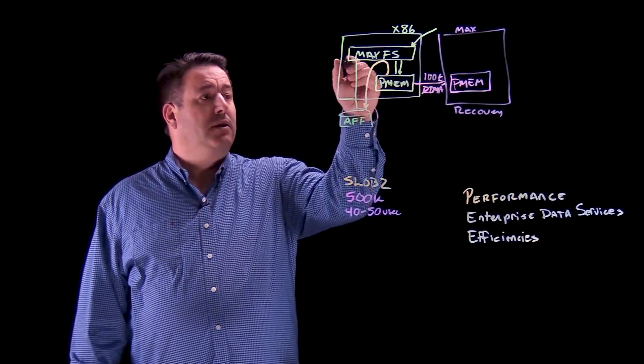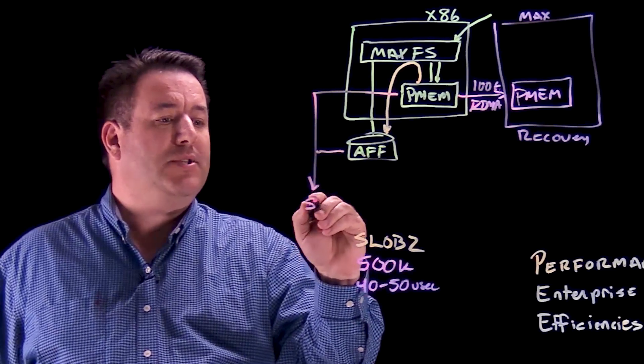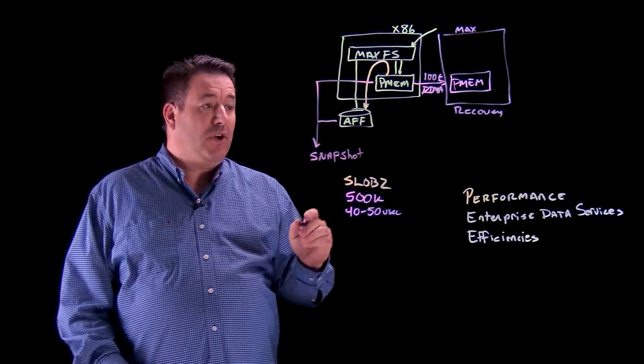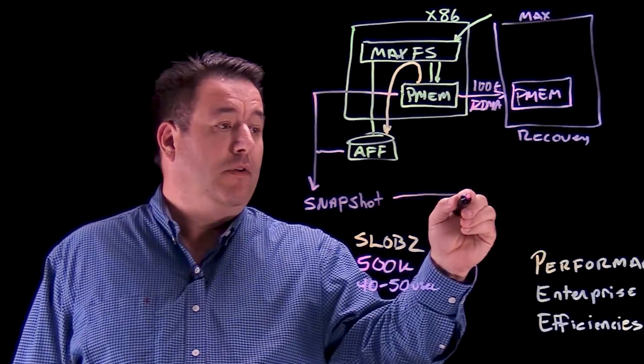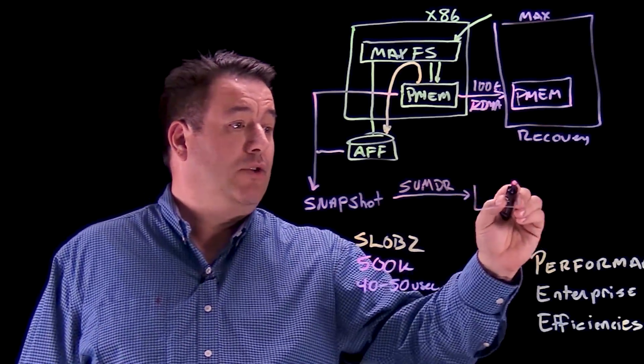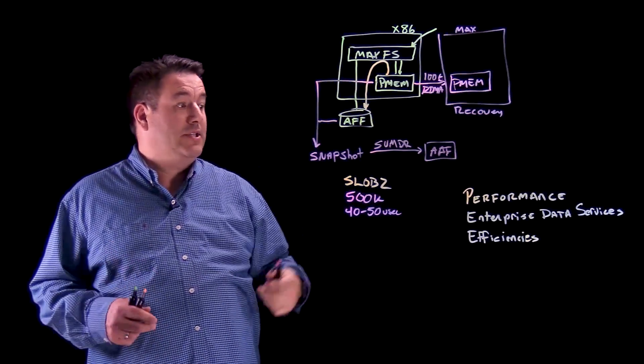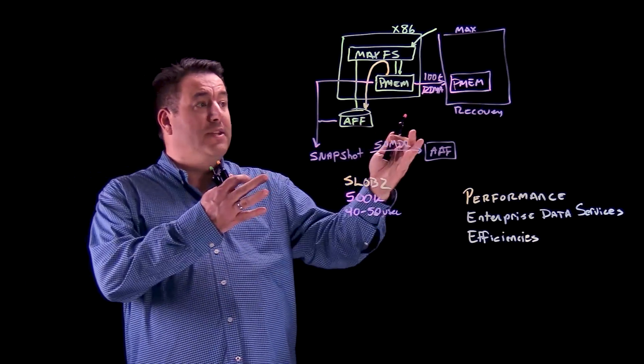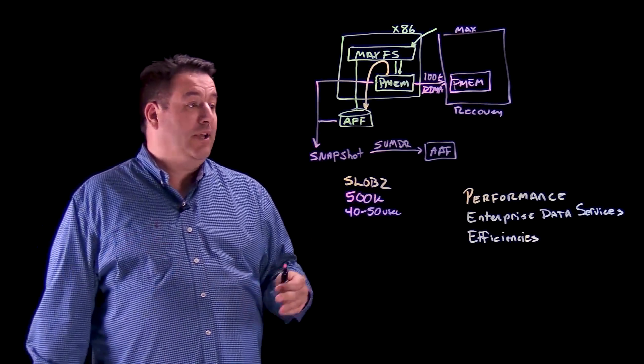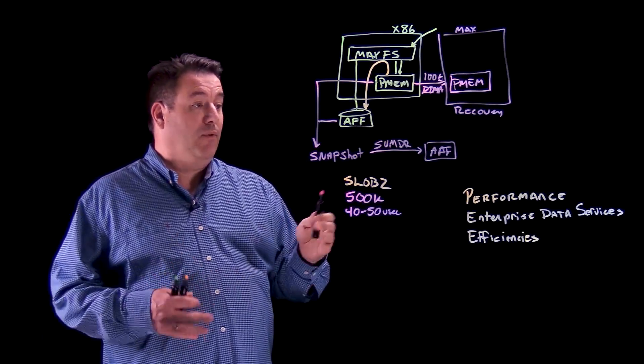We can also do things like take and consolidate the storage and persistent memory layer into a snapshot for point in time recovery. We can also then replicate via SVMDR from one site to another site to an ONTAP AFF system at that data recovery site, disaster recovery site. So we got great performance. We have some enterprise data services that allow us to protect the persistent memory, take snapshots for recovery, in-place recovery, and be able to replicate to a disaster recovery site for DR events.